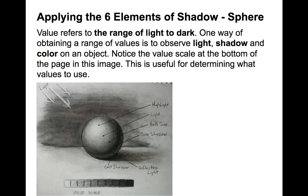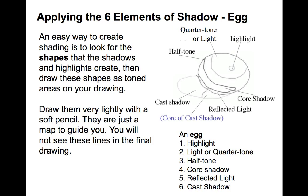Applying the six elements of shadow to a sphere: This is a demonstration of how you apply the six elements to a sphere. You can see the highlight, light, half tone, coarse shadow, cast shadow, reflected light, and the light source all represented.